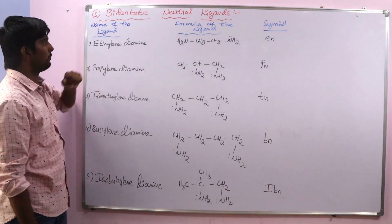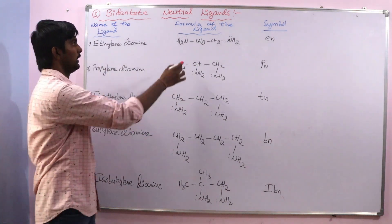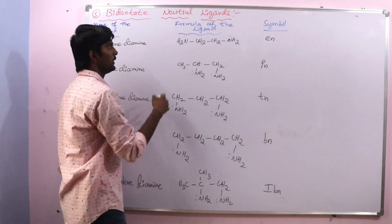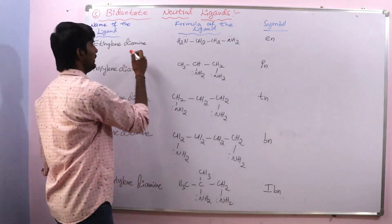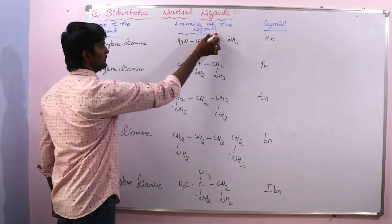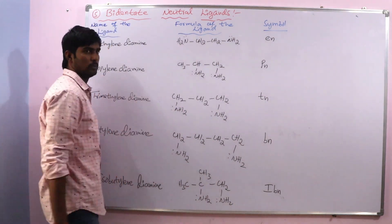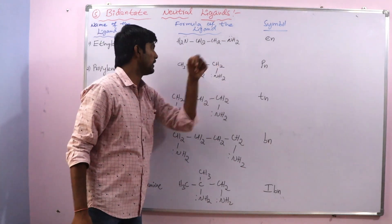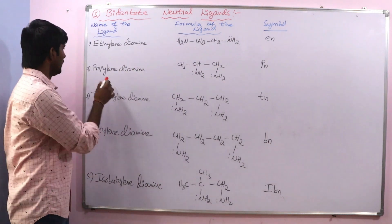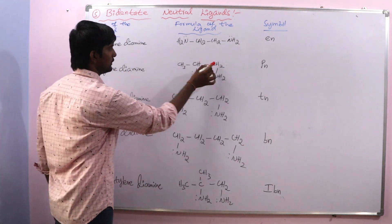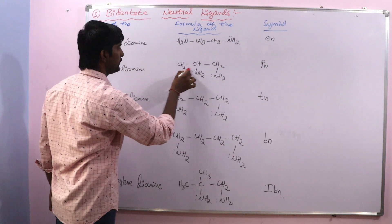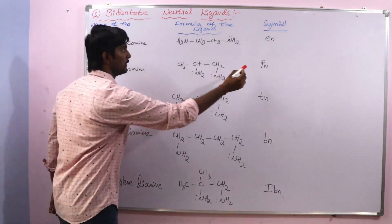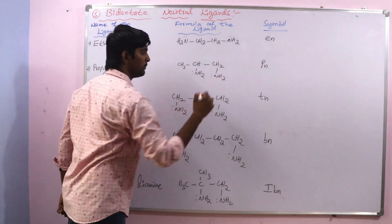First, ethylene diamine — this is the formula and structure. It has an ethylene group with two amine groups. The symbol is EN. Next is propylene diamine — this is the propylene group with two amines present. The symbol is PN.